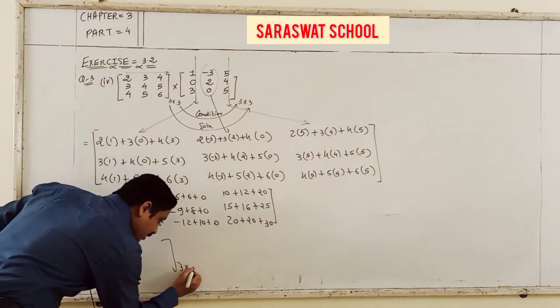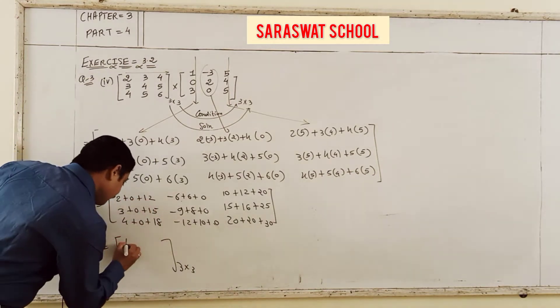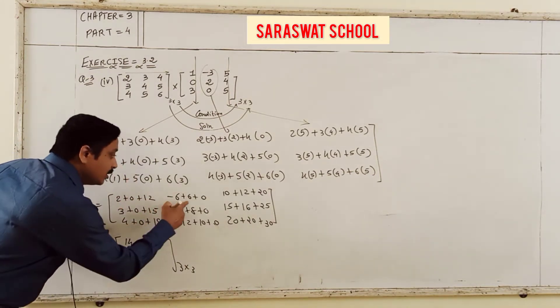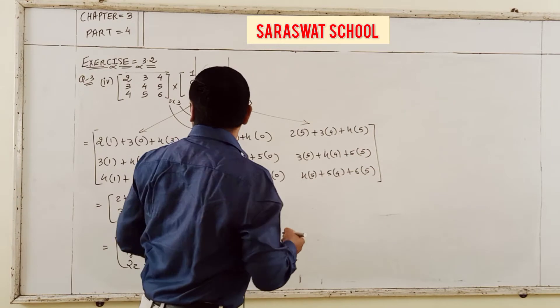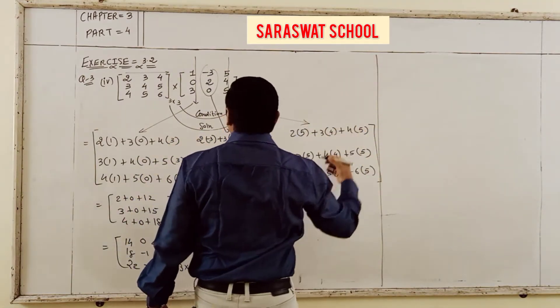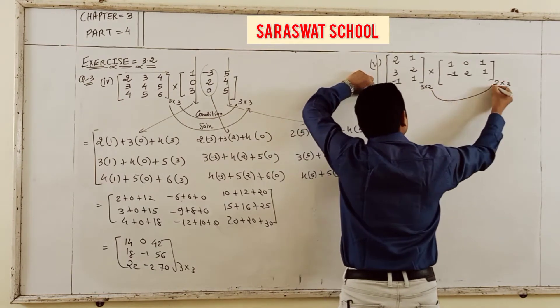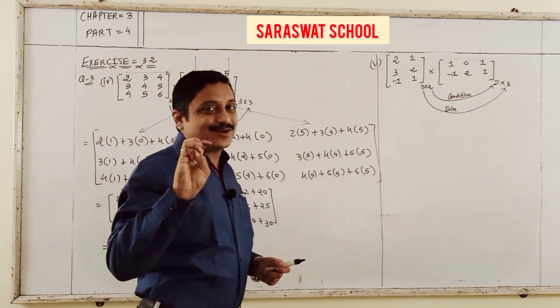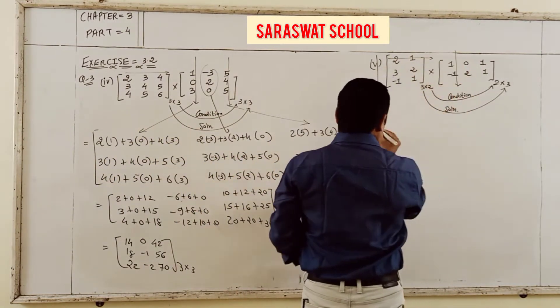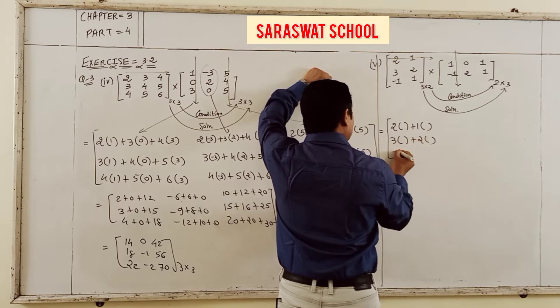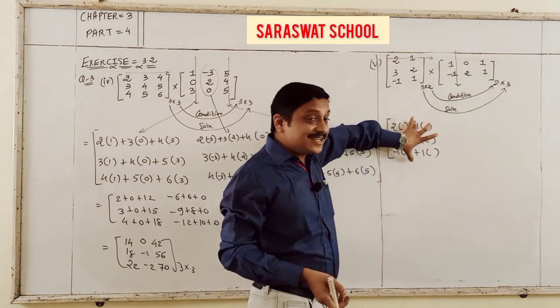Yes: minus 6, 6, 0; minus 9, 8, 0; and minus 12, 10, 0. And at the end: 5, 2, 10; 4, 3 is 12 and 5, 4 is 20. One more: 5, 3 is 15; 4, 4 is 16; and last 5, 5 is 25. And last: 20, 20, and 30. So the last answer must be in 3×3 form. Your answer is 14, 20, 30, 40, 40, 42 — and also 20, 30, 40; 50, 56; and last 40, 30, 70.